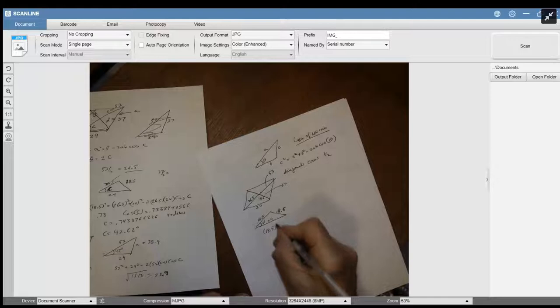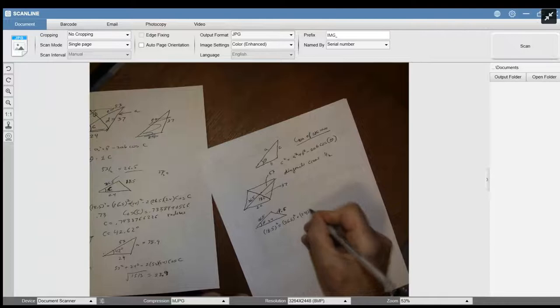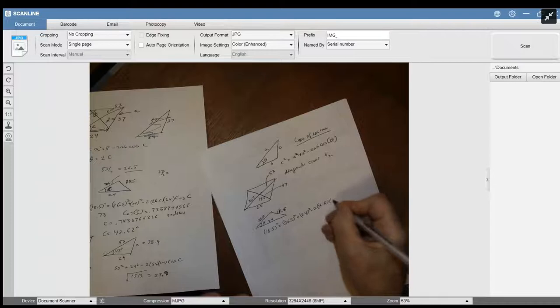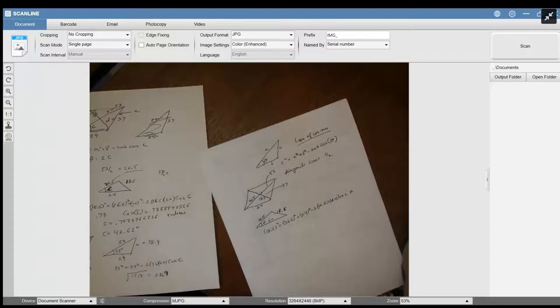all you do is 18.5 squared equals 26.5 squared plus 24 squared minus 2 times 26.5 times 18 times 24 times the cosine of alpha, which is there.